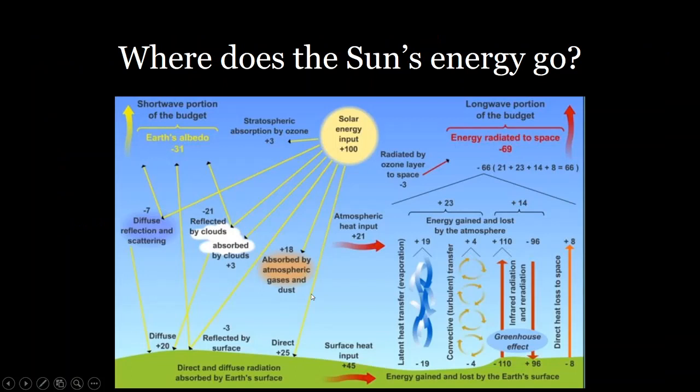So where does that energy actually go? So we can think about it as if the sun is emitting 100 units of energy, where do those 100 units go? And so about 25% of those energy units reach the surface of the Earth and go towards heating the ground, the surface.